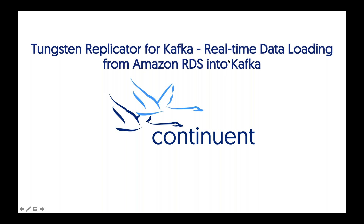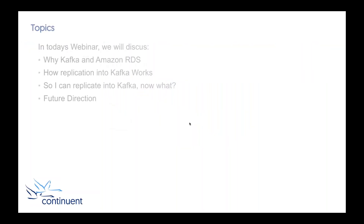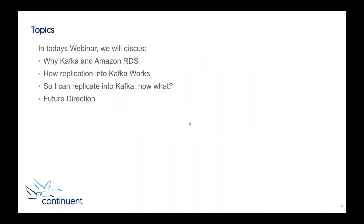So with those admin items out of the way, it's time to get started. Today we're looking at loading data from Amazon RDS into Kafka. We'll cover why you would use Kafka in the first place, how the replication works, how the Tungsten Replicator gets that data in, what you can do with it, and then a live demo. We'll also look at some new features and future functionality coming as part of the overall replicator direction.